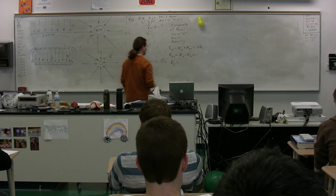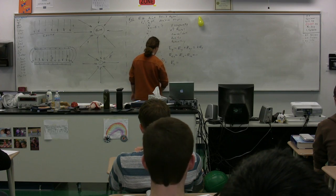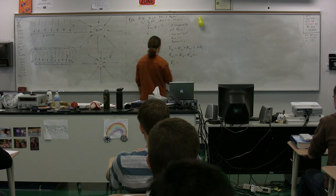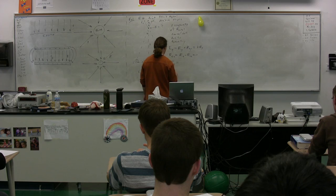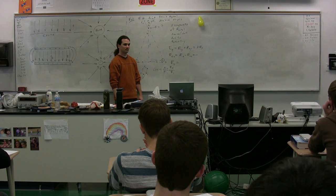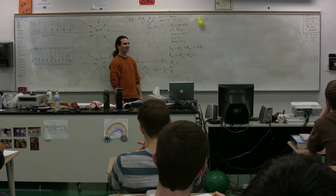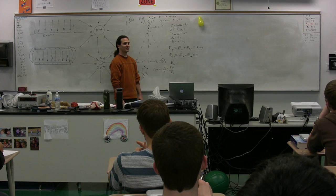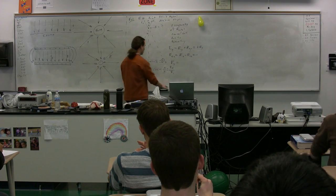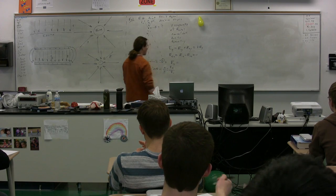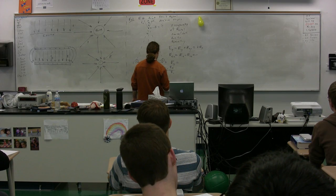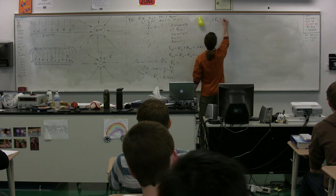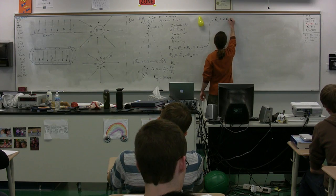Cosine equals adjacent over hypotenuse, which would be E1y over E1. Don't forget the theta — cosine of theta equals E1y over E1. Therefore, E1 in the y direction equals E1 times the cosine of theta. So the electric field total is equal to 2 times E1 times the cosine of theta.